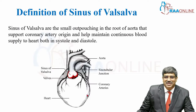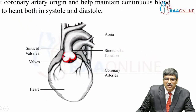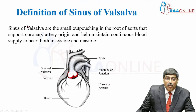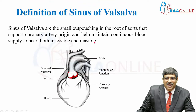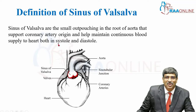Coming to the definition — what is Sinus of Valsalva? These are small outpouchings located in the root of the aorta that support coronary artery origin and help to maintain coronary blood flow both in systole and diastole.